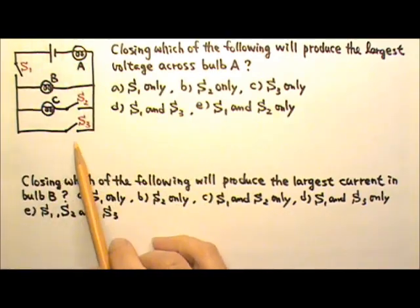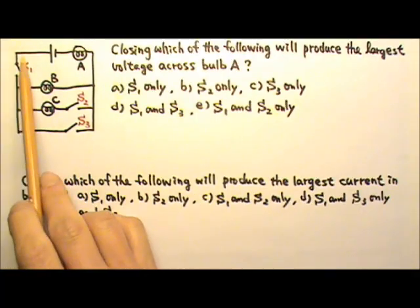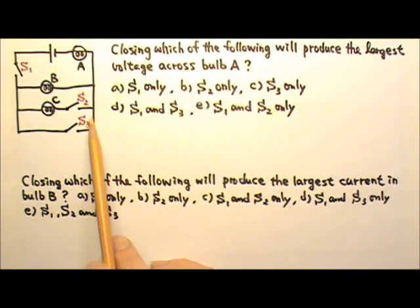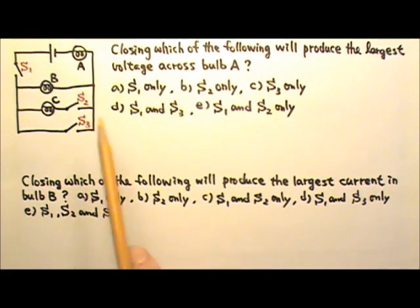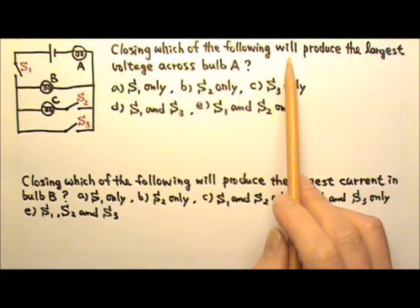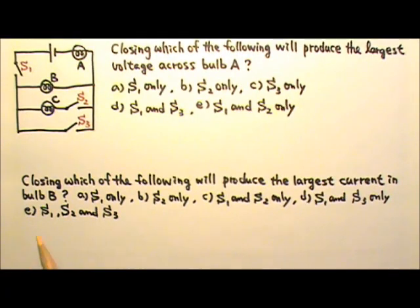In this circuit, we have three light bulbs A, B, and C, and three switches S1, S2, and S3, and initially all three switches are open. Closing which of the following will produce the largest voltage across bulb A, and closing which of the following will produce the largest current in bulb B?